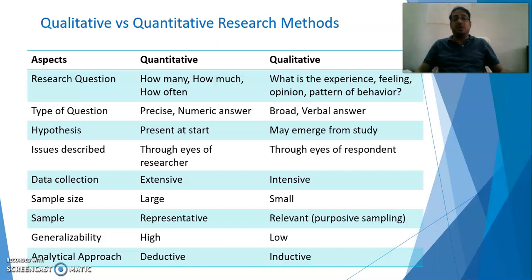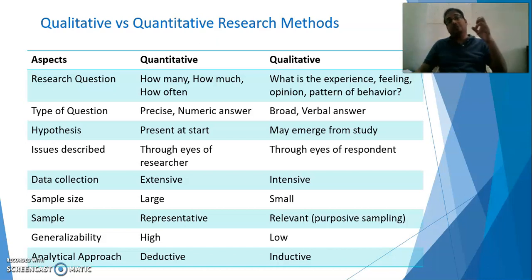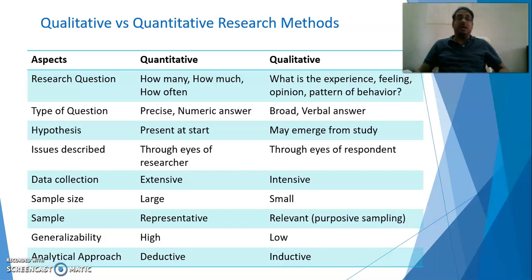How to describe the issues related to your research: for quantitative, issues are described through the eyes of the researcher — as a researcher you describe what you understand from your perspective. But for qualitative, you describe through the eyes of the respondents — what they feel, what is their experience, opinion, and behavioral pattern.